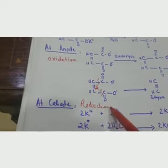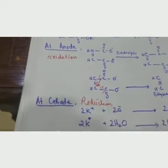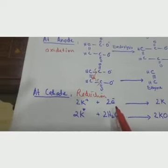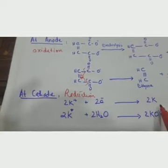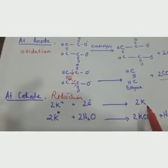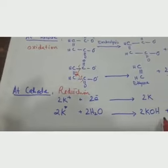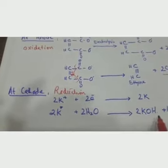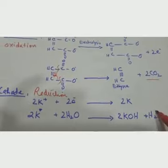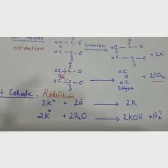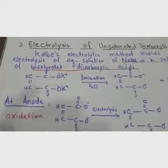At the cathode, reduction occurs — two electrons are absorbed by potassium ions, forming potassium in atomic form, which reacts with water to form potassium hydroxide, and hydrogen gas is released.